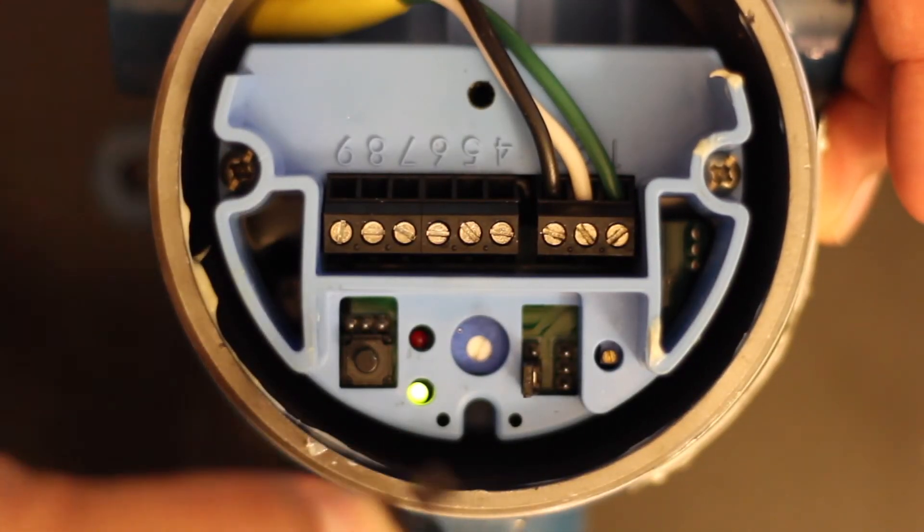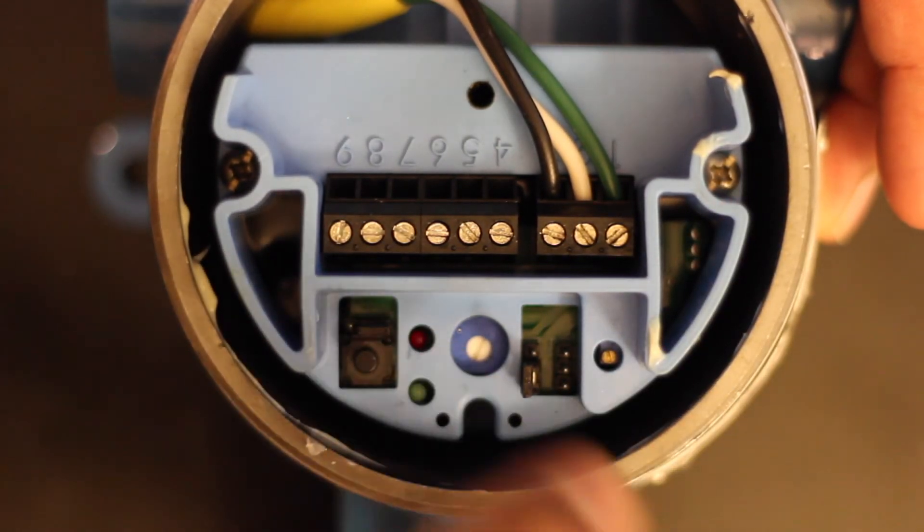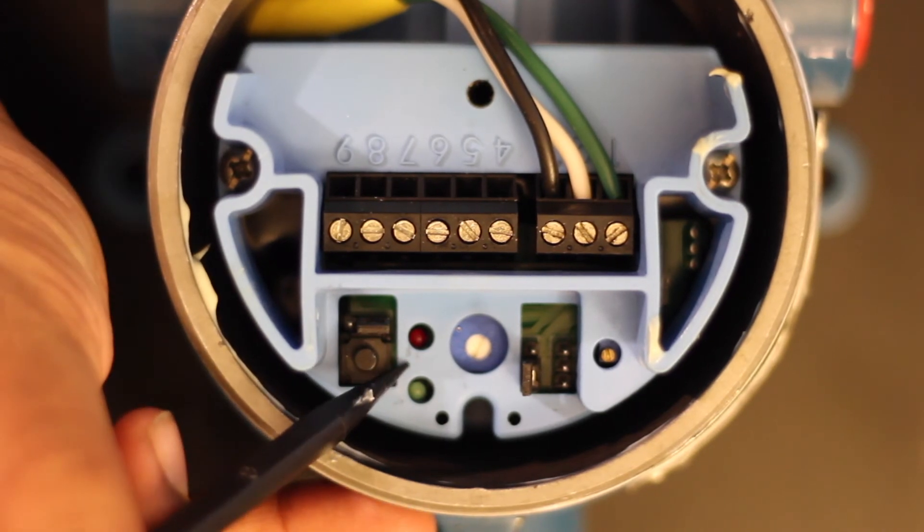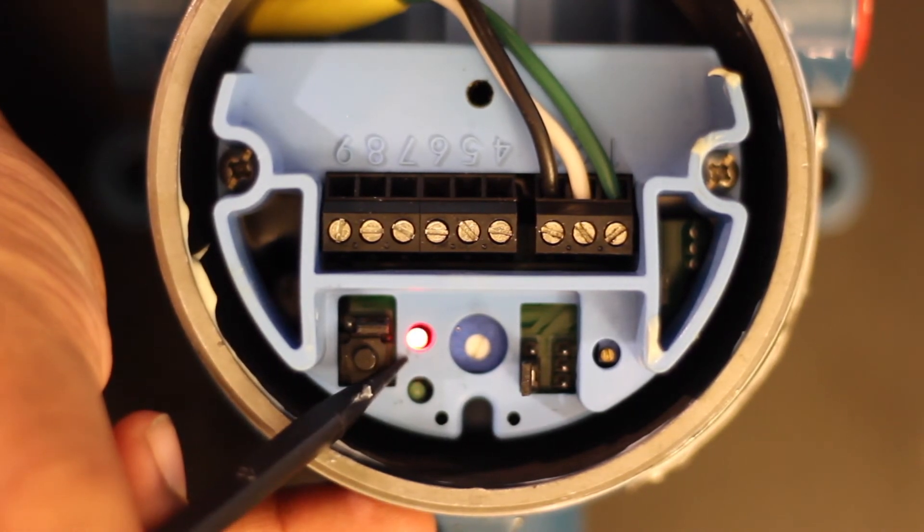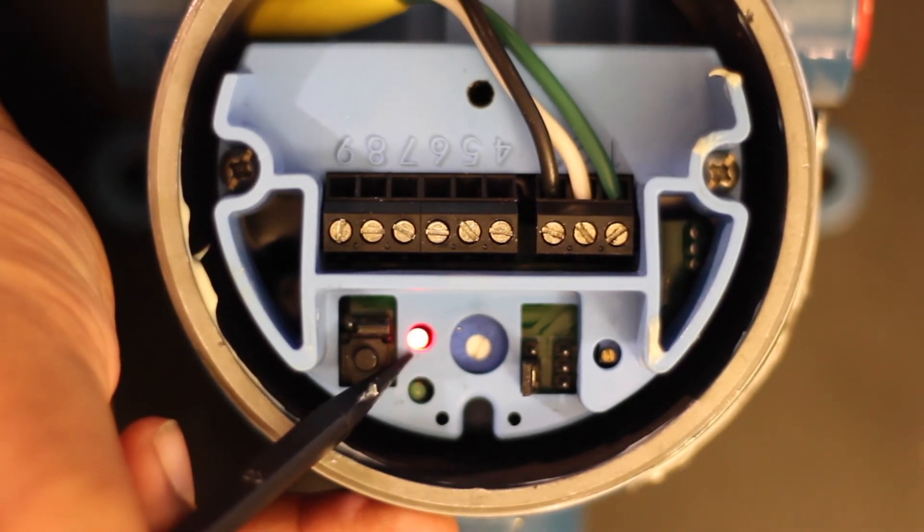Now we'll remove the time delay jumper. Place it on the first two pins closest to the red LED or pins number 1 and 2. The green LED goes out, and as you can see, the red LED flashes twice, pauses, and then flashes twice again. This indicates the mode, so this particular unit is in mode 2.